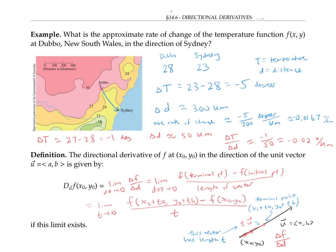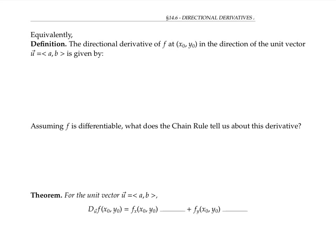This limit gives the definition of the directional derivative, provided the limit exists. Note the notation for directional derivative: it's D_u of f at (x₀, y₀). There's an equivalent way to write the directional derivative of f at (x₀, y₀) in the direction of the unit vector u — it can also be written as the ordinary calculus-one derivative d/dt of f(x₀ + at, y₀ + bt) evaluated at t equals zero.